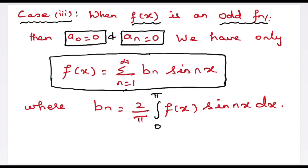Third case: when f(x) is an odd function, a₀ = 0. Since cos(nx) is an even function, f(x)·cos(nx) is an odd function, by the property that odd × even = odd. Therefore, aₙ = 0. Since sin(nx) is an odd function, f(x)·sin(nx) is an even function, by the property that odd × odd = even. Therefore, bₙ = (2/π)∫[0 to π] f(x)sin(nx) dx.